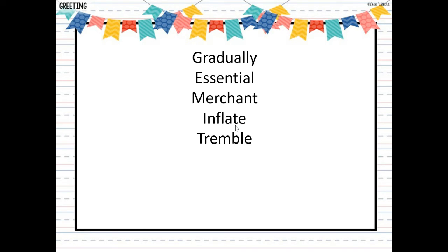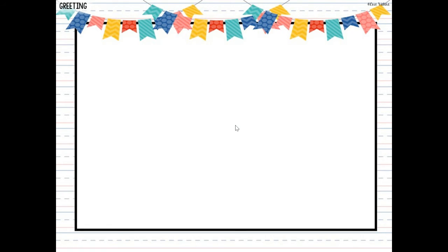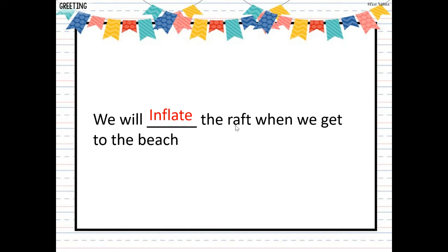All right, our word choices for our blanks are the words gradually, essential, merchant, inflate, and tremble. Think about what each of those words mean. Our sentence says, we will blank the raft when we get to the beach. What will you do to the raft when you get to the beach? You should have said we will inflate the raft. Remember, inflate means to fill with gas or air or to blow up.